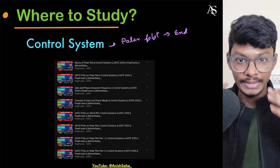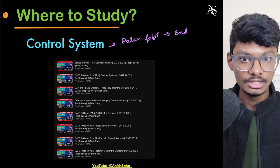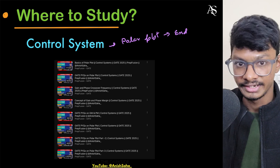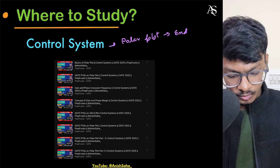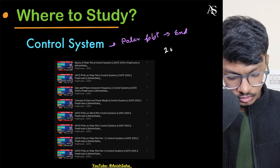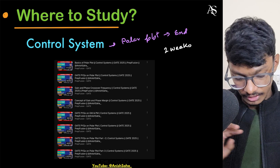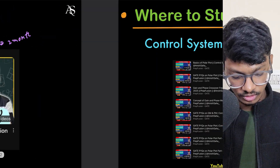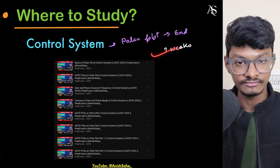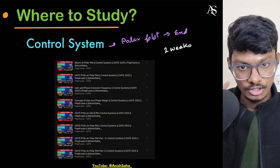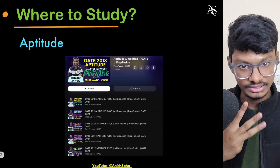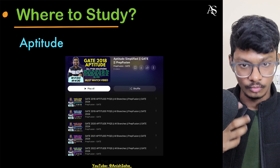Understanding controllers and compensators will help you intuitively understand phase margin and gain margin, and how to design a controller. This knowledge helps you solve problems in other areas as well. Control systems will not take much time — around two weeks. So within these two months of analog study, you're also investing time in control systems, making it three months total.